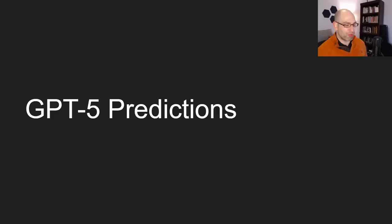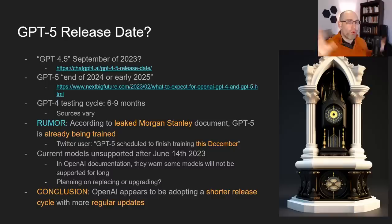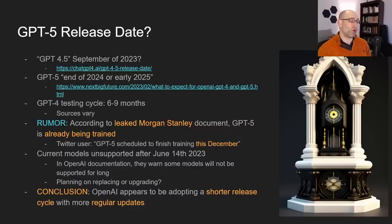So now let's skip ahead to GPT-5 predictions and some rumors. First, top of mind: when is it going to come out? One website expects GPT-4.5 to come out this September, a quicker turnaround. Another blog said we should expect GPT-5 by the end of 2024 or early 2025, which given the historical pattern seems pretty reasonable. The testing cycle for GPT-4 was six to nine months — rumor has it they had GPT-4 last summer or fall but delayed release due to testing.